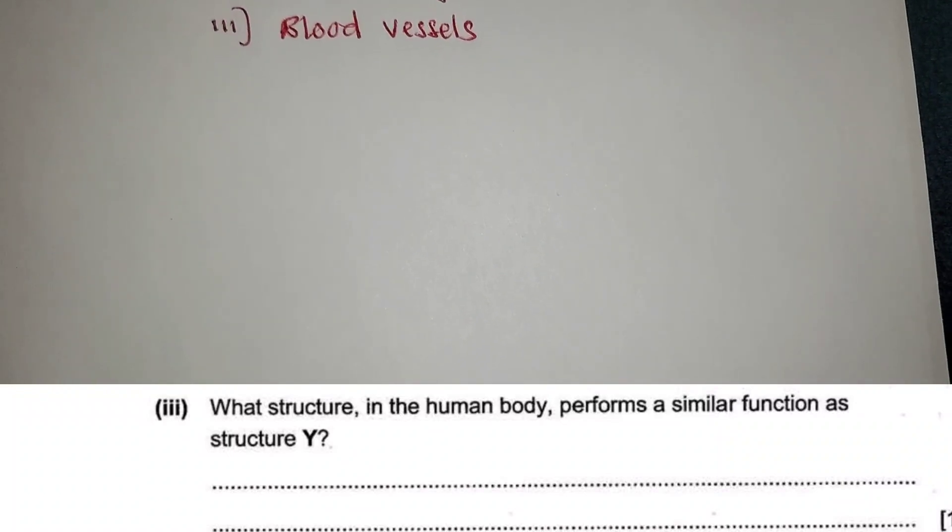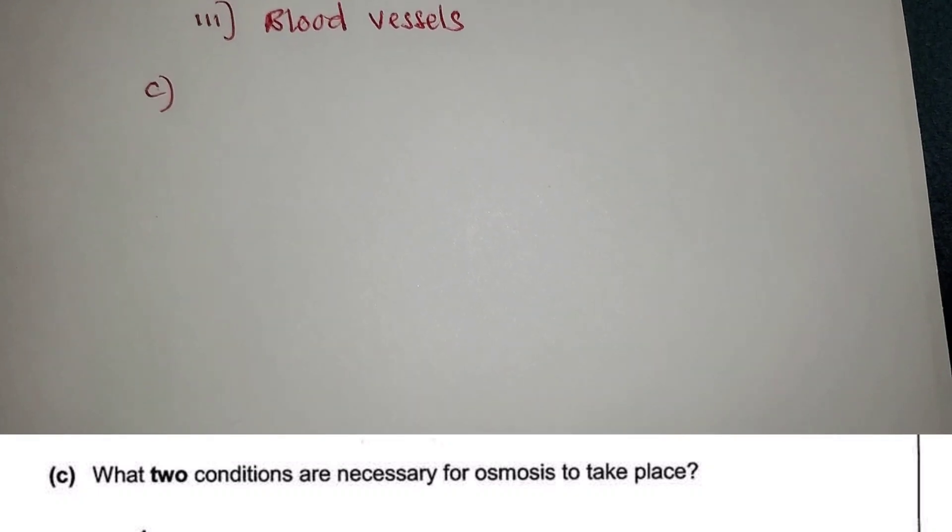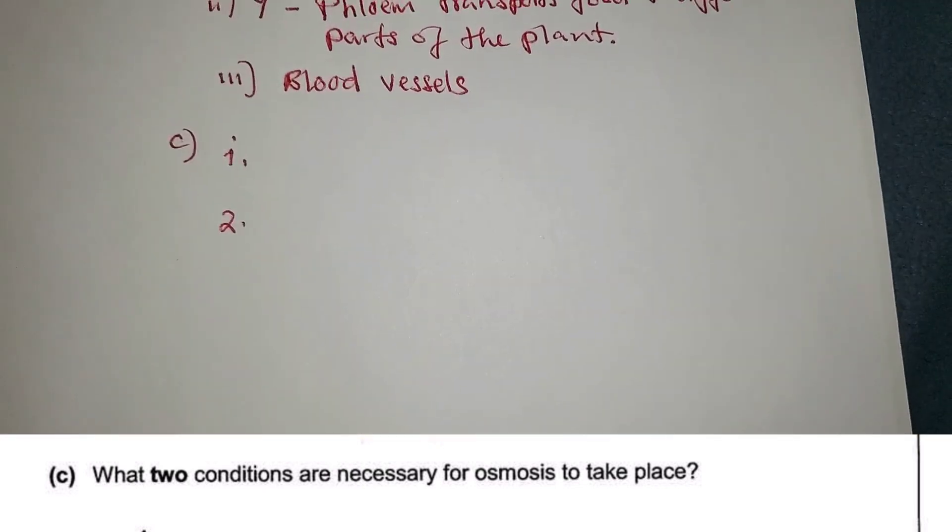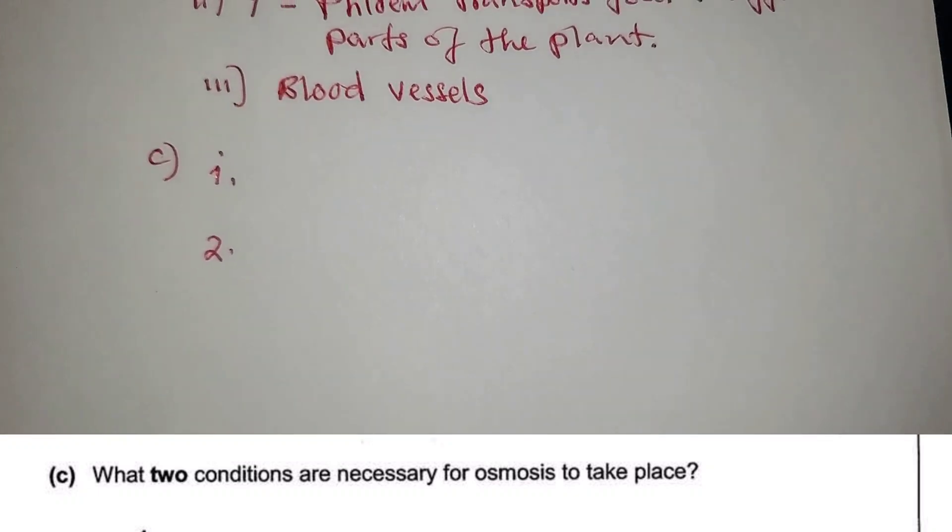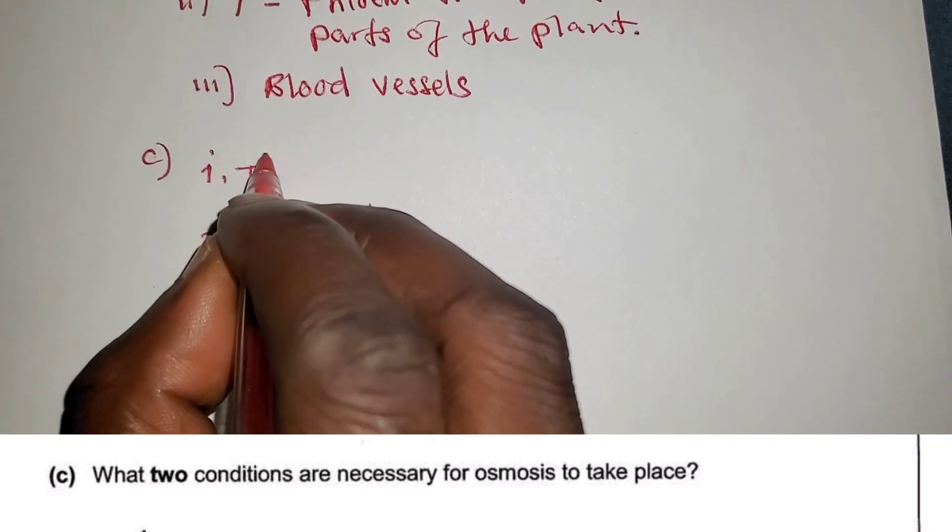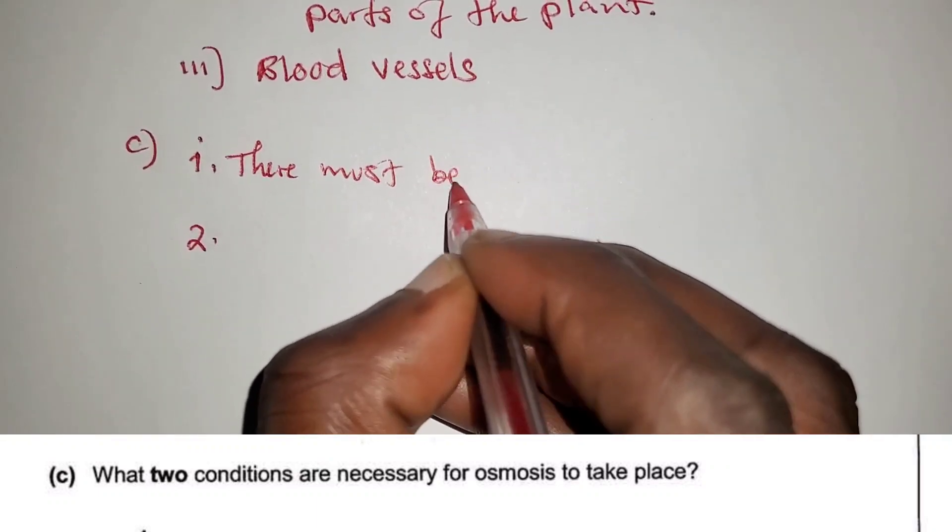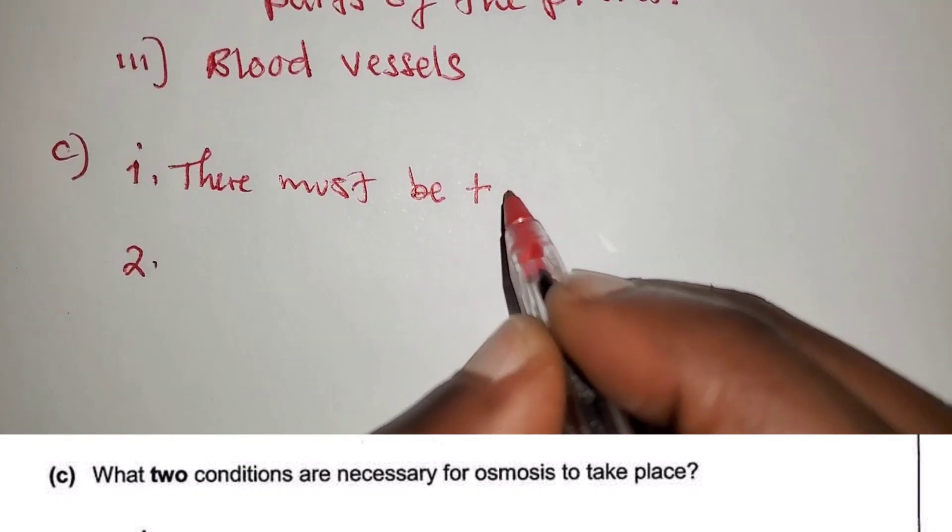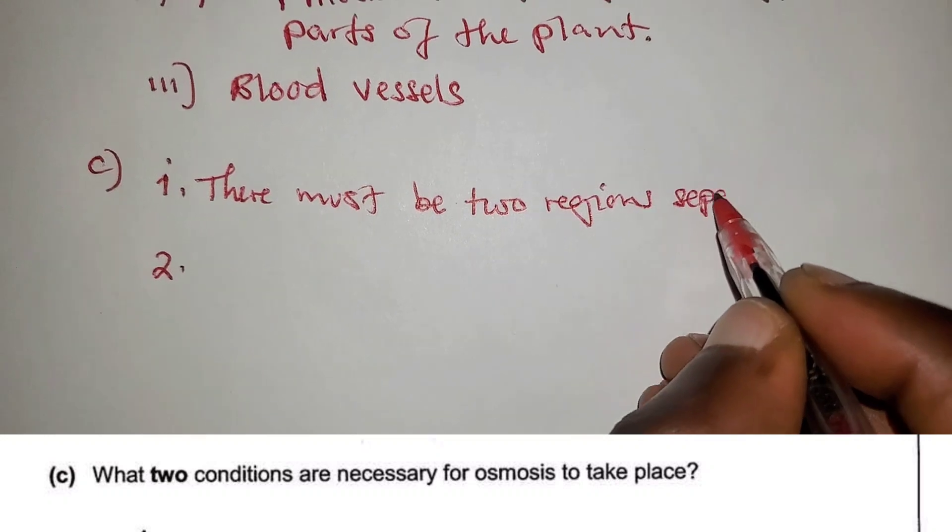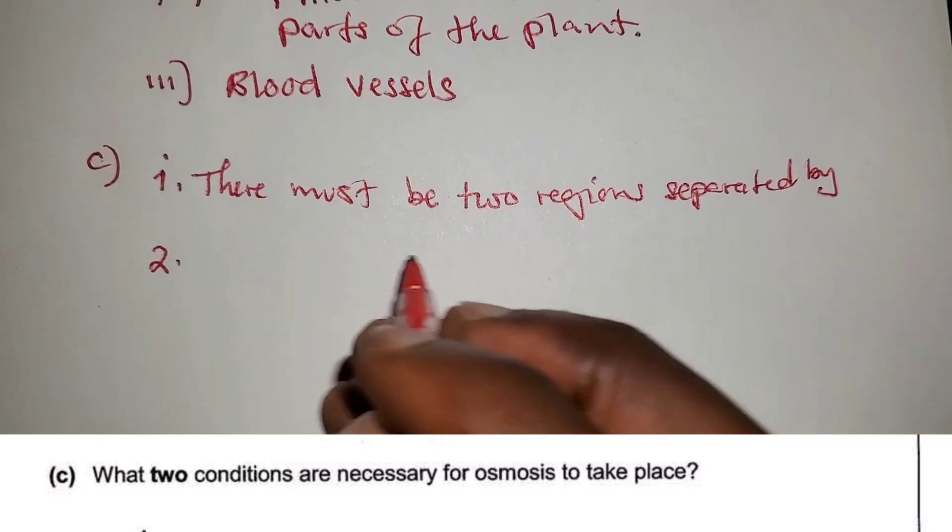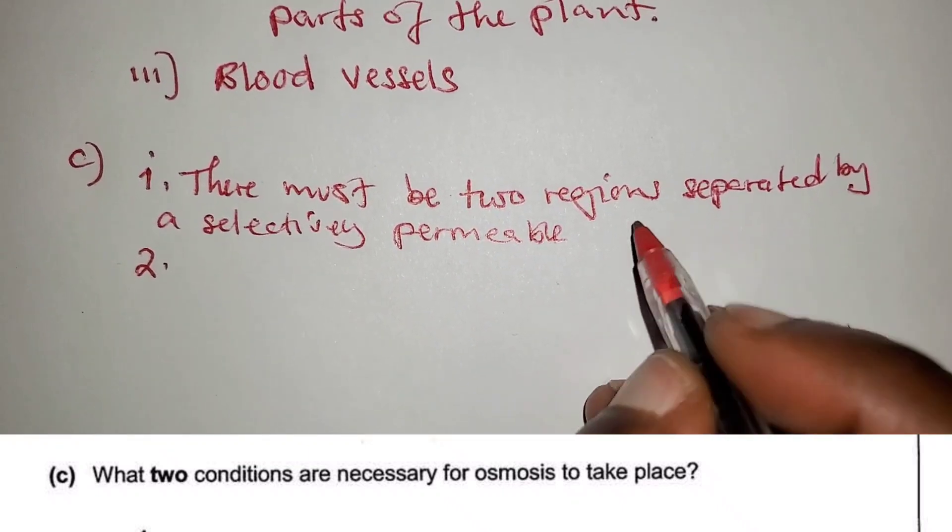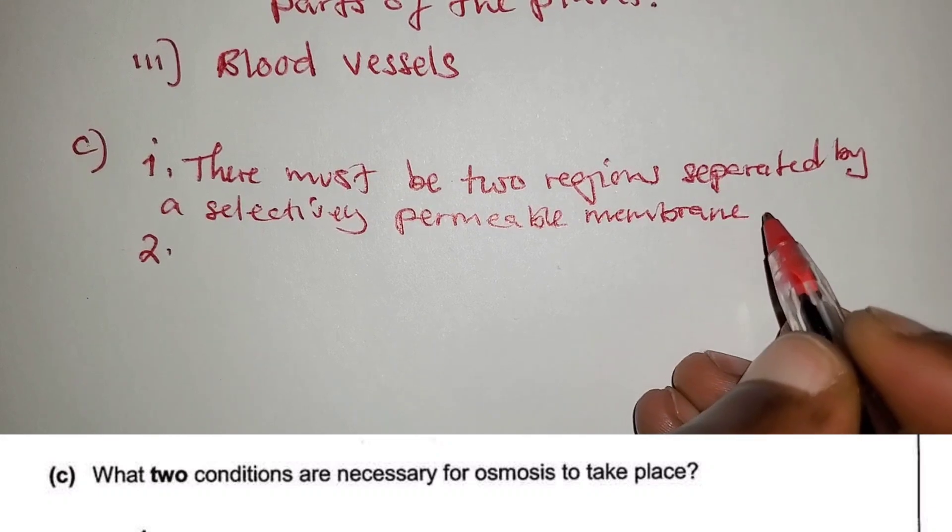Let's go to the next question. The question reads, which is question C: what two conditions are necessary for osmosis to take place? For osmosis to take place, number one is that there must be two regions separated by a selectively permeable membrane.